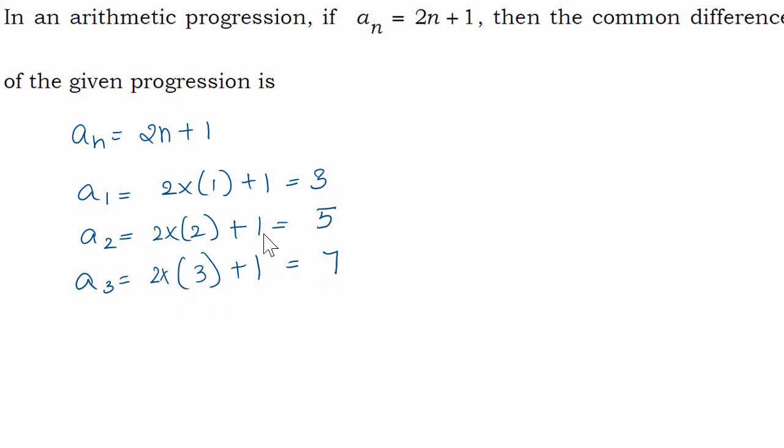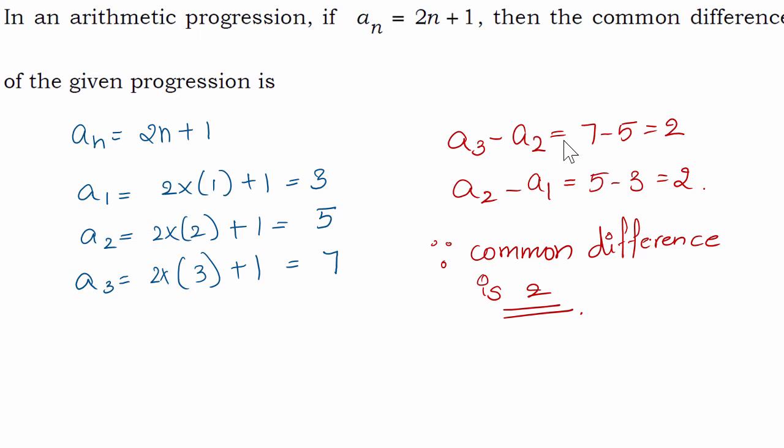So now we know the value of a1, a2, a3. What is the common difference? Common difference is a3 minus a2, which is 7 minus 5, equals 2. a2 minus a1, which is 5 minus 3, equals 2.